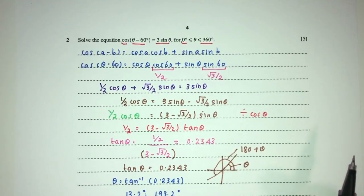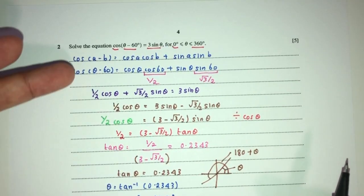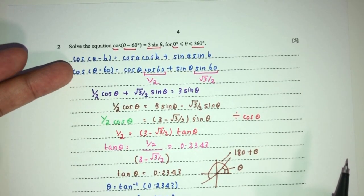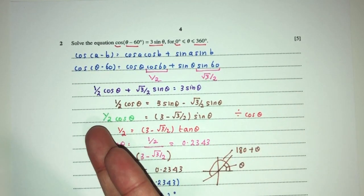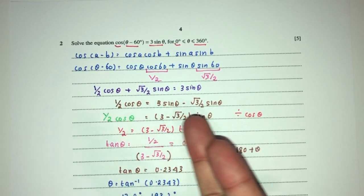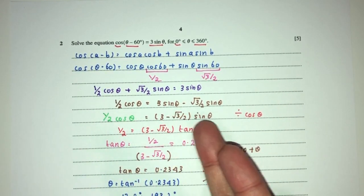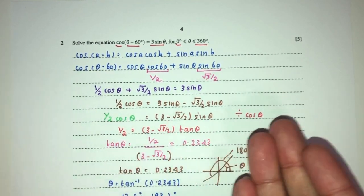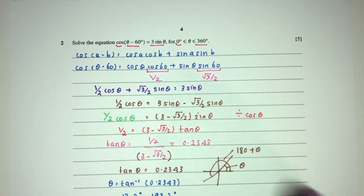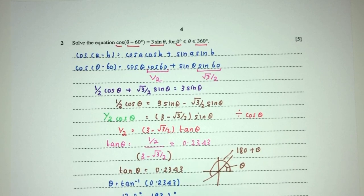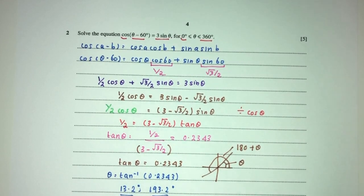The main point here is to expand and simplify step by step. Whenever we have an equation in terms of cos and sin separately, we can divide through by cosθ everywhere to get tan and then solve. This is your answer for question number two.